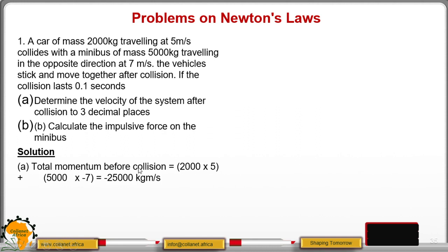The total momentum before collision will be given by the mass m1 multiplied by u1: you get 2000 multiplied by 5, then plus the mass m2, which is 5000, multiplied by u2. The velocity here is taken to be negative because it is in the opposite direction. So when you multiply and add, you get that the value is negative 25,000 kg meter per second.